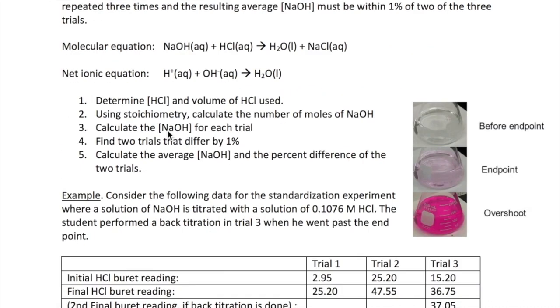Let me first explain the calculation and then we'll do an example. The molecular equation of the reaction is shown here, where NaOH reacts with HCl to form water and NaCl. The net ionic equation, which shows only the species relevant to the reaction, contains only proton and hydroxide ion. The other species are just spectator ions. So, how do we calculate the concentration of NaOH? We follow the steps shown here.